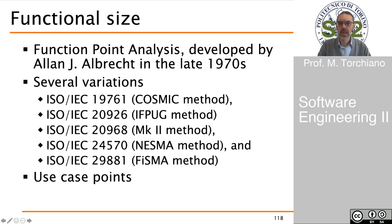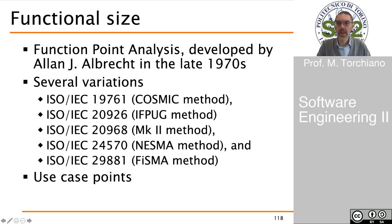Functional size can be measured in different ways. One of the most widespread ways of measuring functional size is by function point. Function points were first defined in the 70s and then were standardized using different computing methods in five different ISO standards. So we have the COSMIC method, the IFPUG method, the Mk2 method, the NESMA, and the FISMA method. These are essentially based on the same concept of function point, but function points are computed using different criteria.